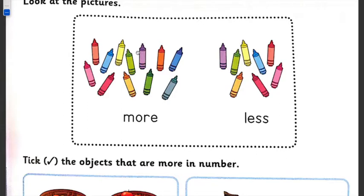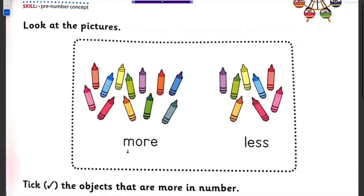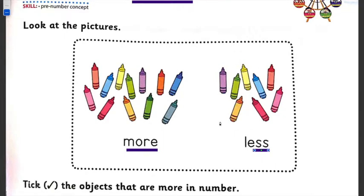So we have to understand what more than and less than means. If you look at the crayon colors, you will see what more looks like and what less looks like. We are doing comparison — you will tell which is more and which is less.